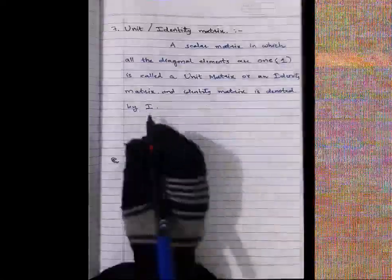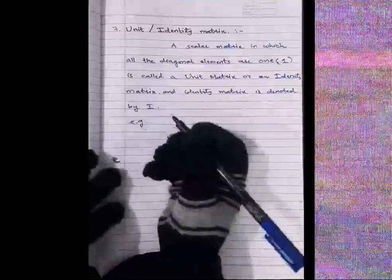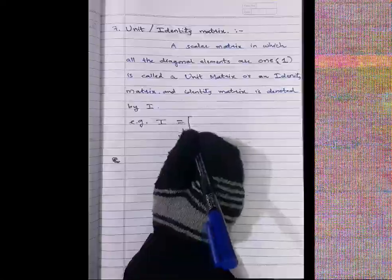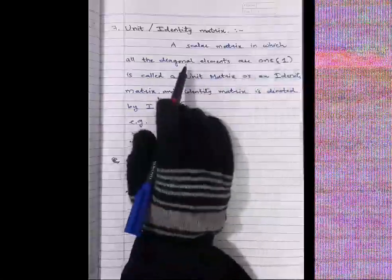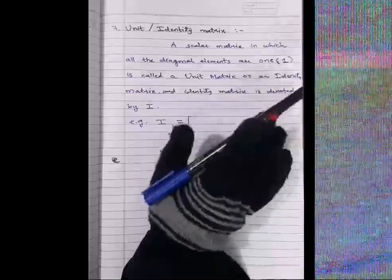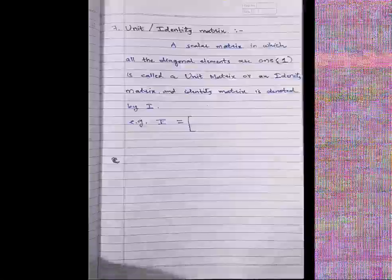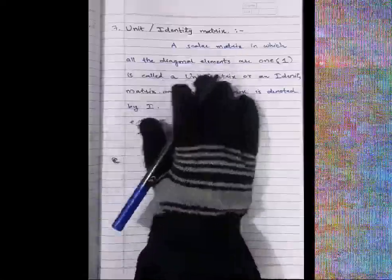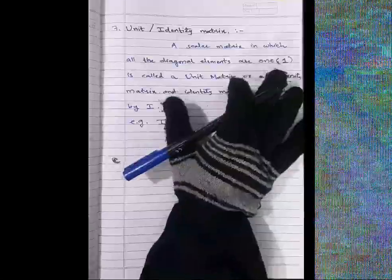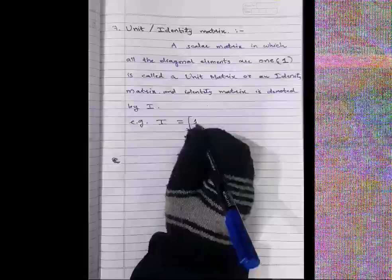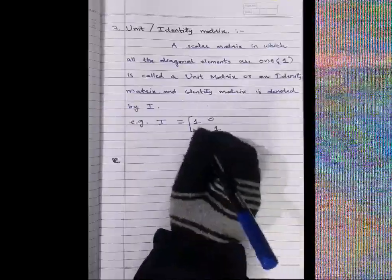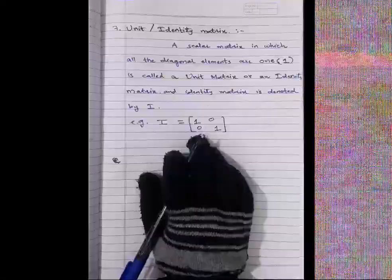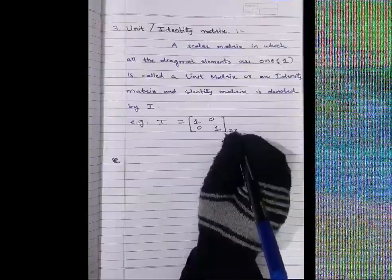Example of an identity matrix: I equals a matrix where all diagonal elements are 1 and all non-diagonal elements are 0. This is the identity matrix of order 2×2, denoted I₂. It is a scalar matrix because all diagonal elements are equal (all are 1), and it is an identity matrix because those diagonal elements are specifically 1.